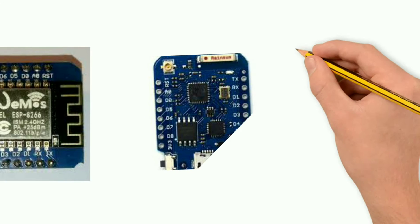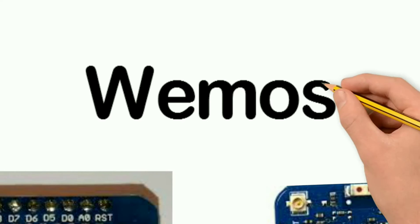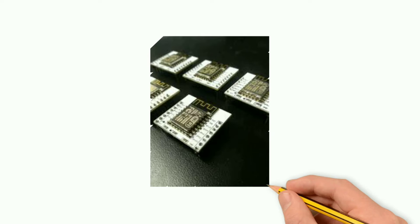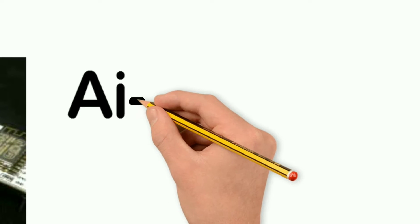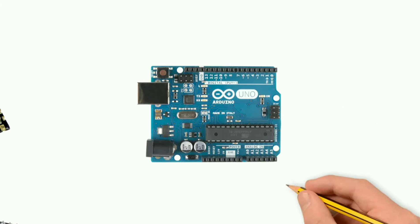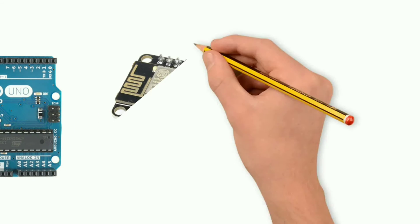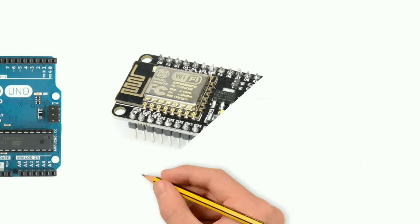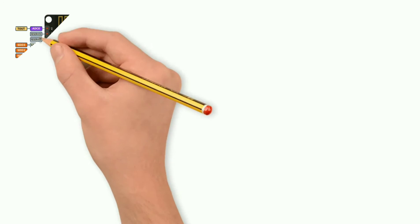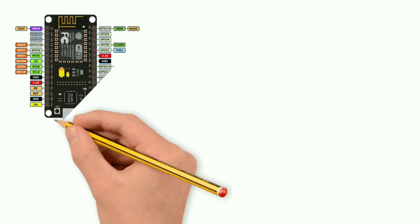The development boards available include Wemos and Espressif. Looking at the ESP range of series, the first third-party development board appeared in 2014. The NodeMCU board has a dedicated power socket. You can use micro USB for both programming and powering the board.